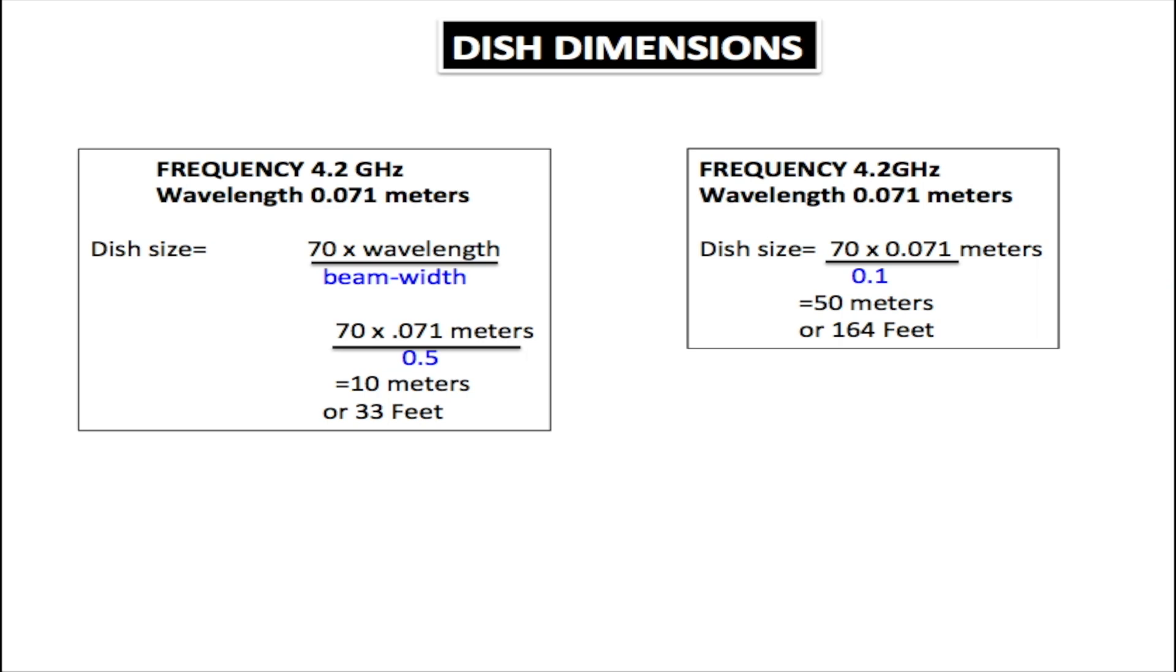Now if for any reason you have a dish and you would like to calculate the beam width of that dish, the equation for that would be beam width equals 70 times wavelength over dish size. You just need to change the beam width with dish size.